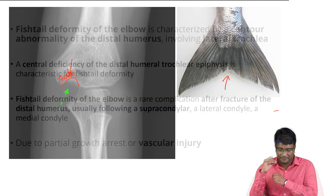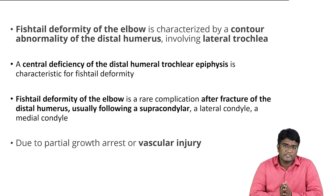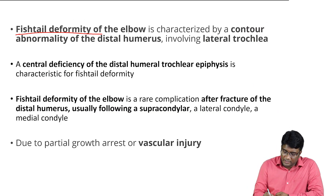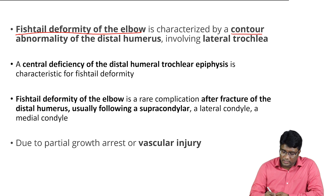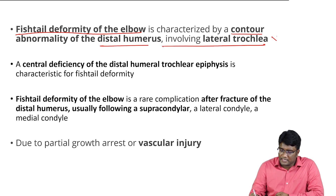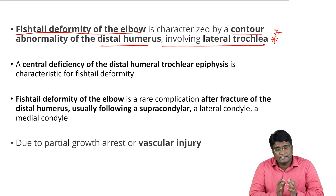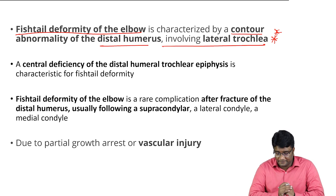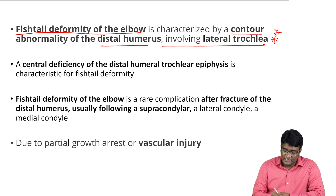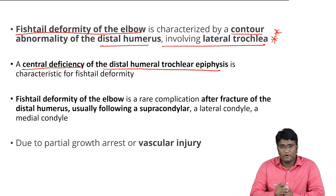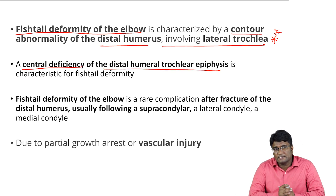Let's review: fish tail deformity of the elbow is characterized by a contour abnormality of the distal humerus. It involves the lateral aspect of the trochlea — not the lateral condyle. There is a central deficiency of the distal humeral trochlea epiphysis giving that fish tail-like deformity.